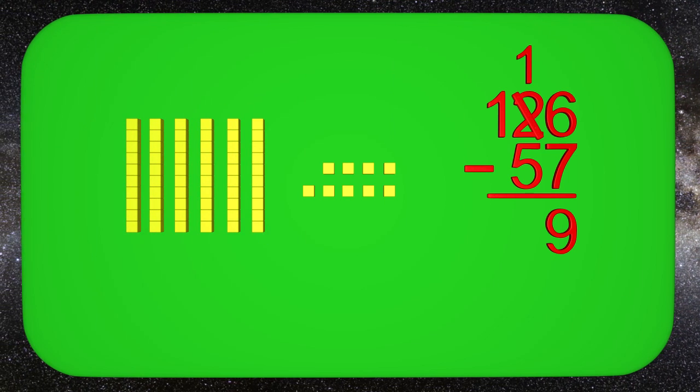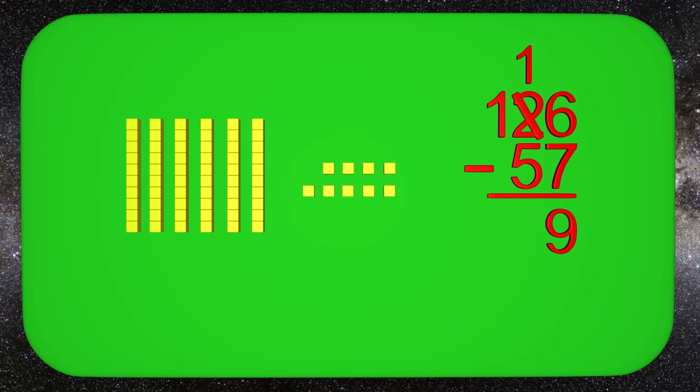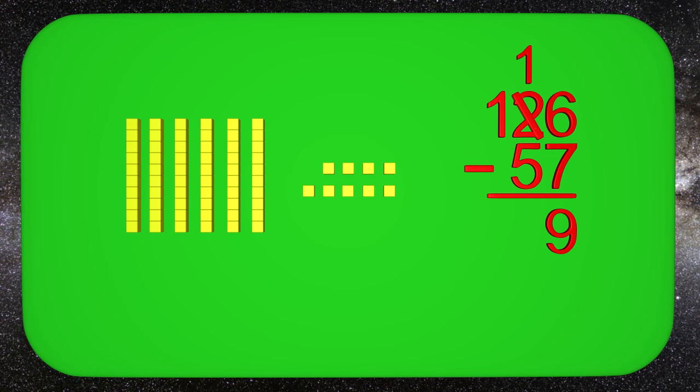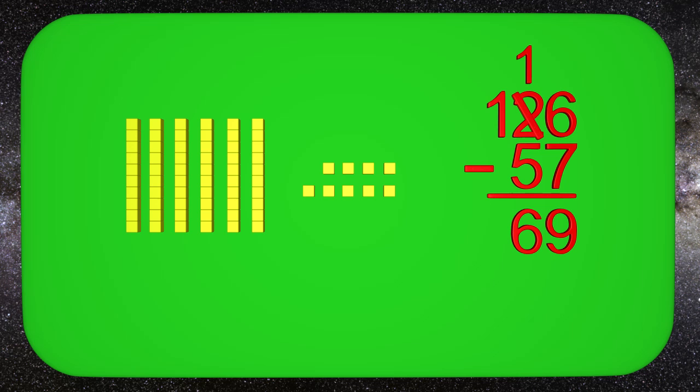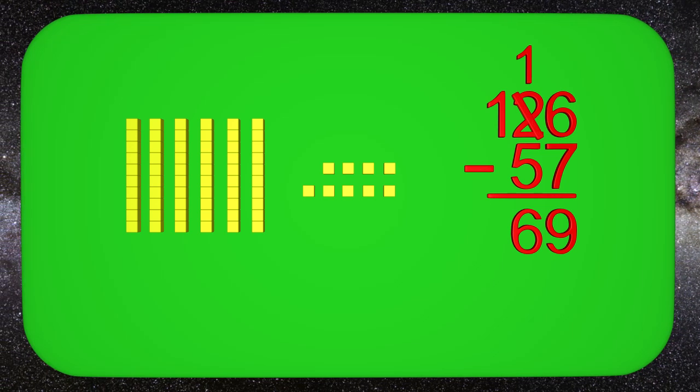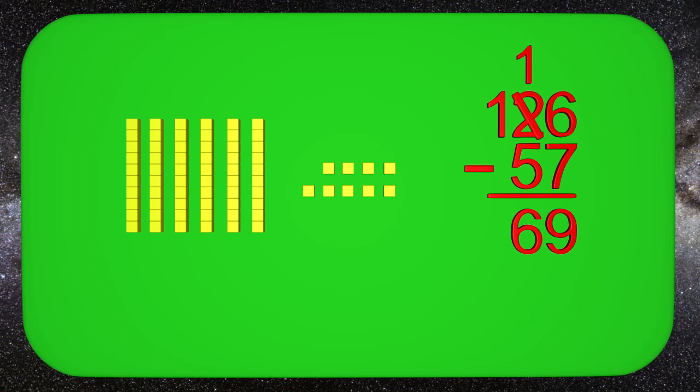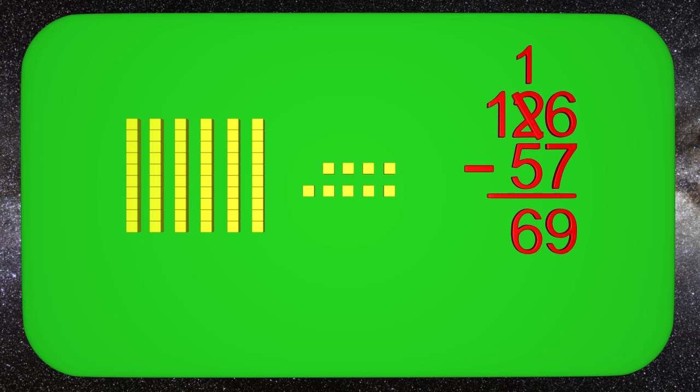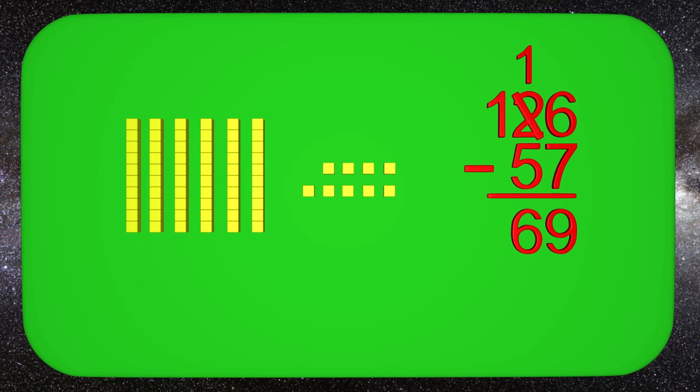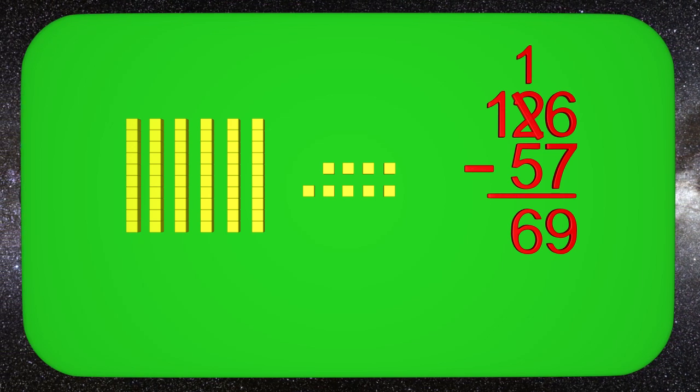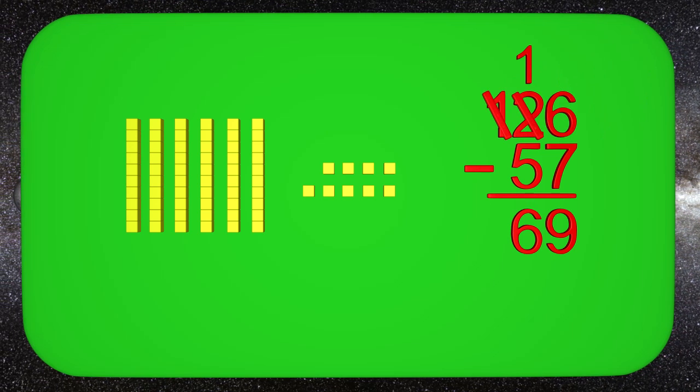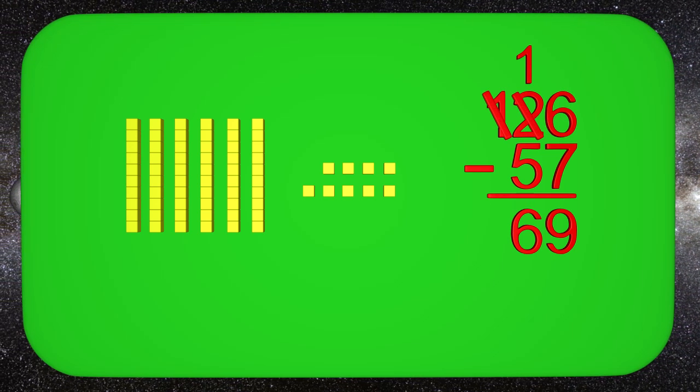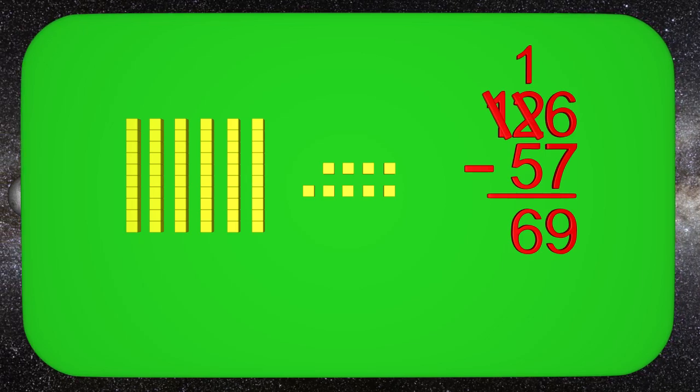Now how many tens am I left with? I am left with 6, so I put the 6 down here. If you look at the numbers, we have no more hundreds. Do you remember why? You are right. We traded the hundreds for tens. So let's cross out the 1 in the hundreds place. The answer is 69, and we solved it showing all of our work.